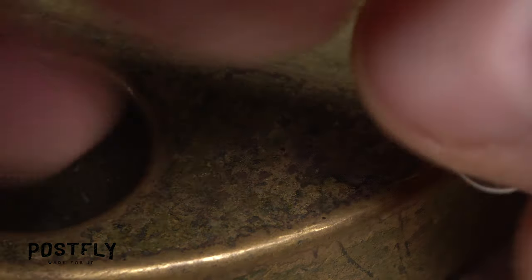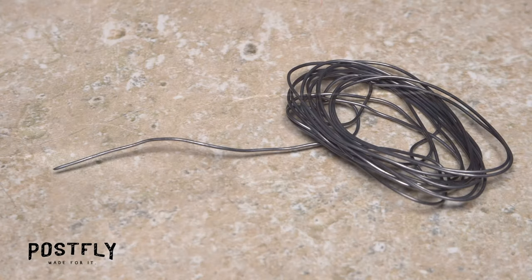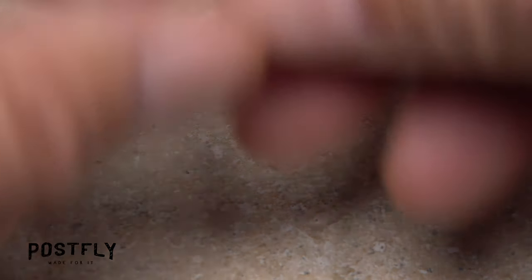Begin by getting one of the extra-strong forged hooks firmly secured in the jaws of your tying vise. Then, to add some weight to the fly, pick up the solder wire.